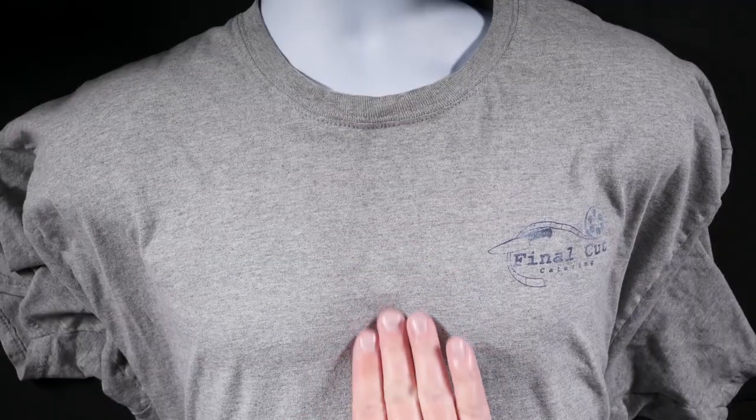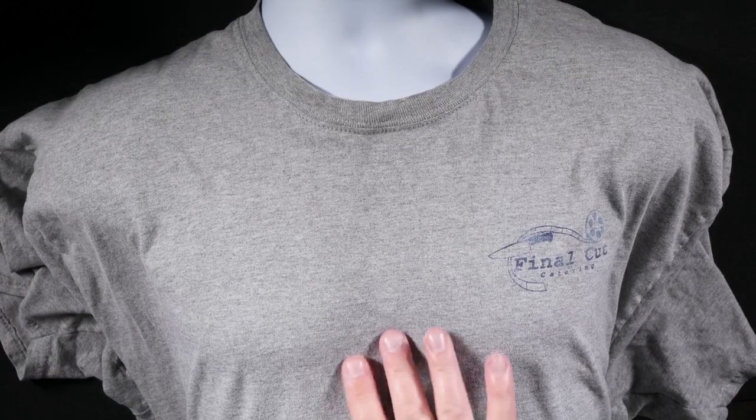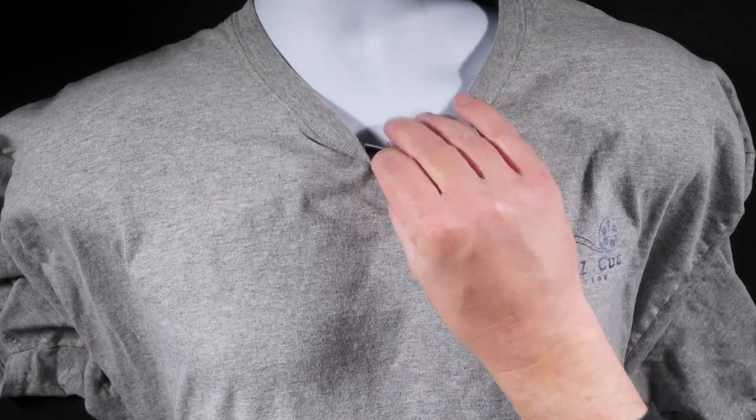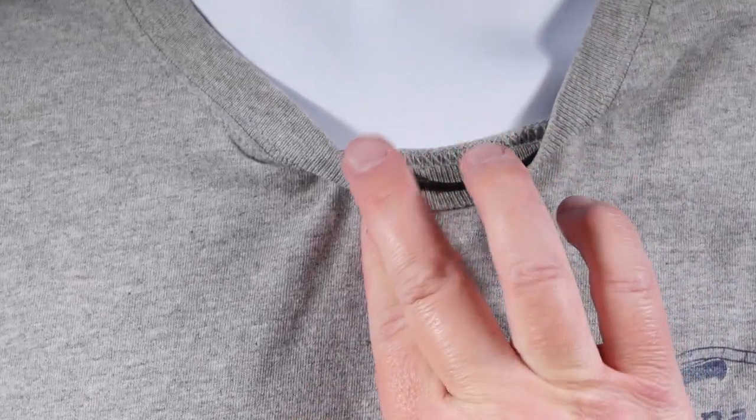If you're looking at this t-shirt and wondering where the lavalier microphone is, well, it's inside of the collar up here. This is the t-shirt concealer option.